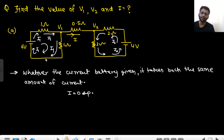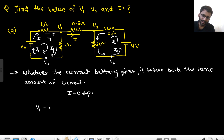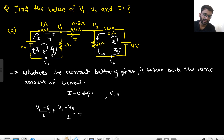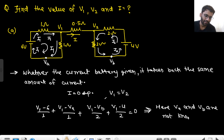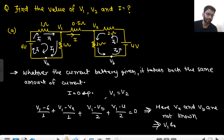Since no ground is mentioned, I can't really tell the potential of these points. I'll assume the potential of one point is VA and the other is VB. If I write the nodal analysis: V1 minus 6 over 1, plus V1 minus VA over 1, plus V1 minus VB over 2, plus V1 minus 4 over 2 equals 0. But VA and VB are not known — that means V1 and V2 cannot be determined.